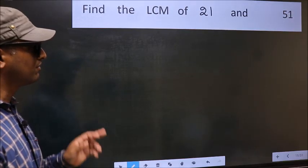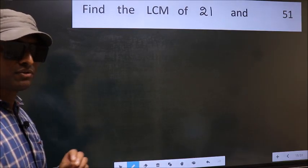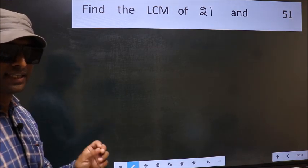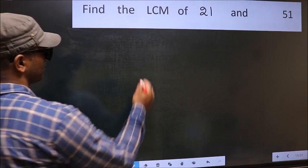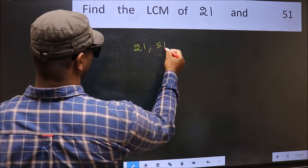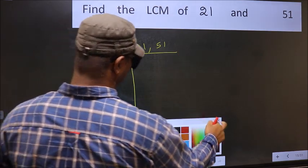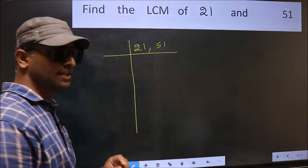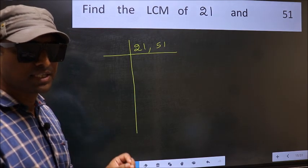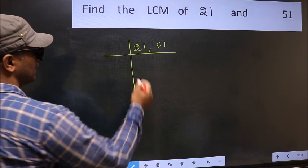Find the LCM of 21 and 51. To find the LCM, we should frame it in this way: 21, 51. This is step 1. Now you should focus on the first number, which is 21.